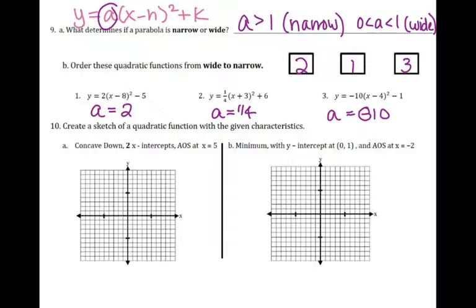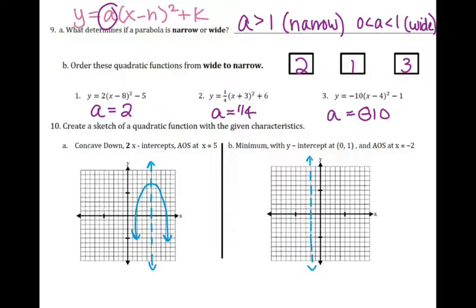Number ten: sketch a graph of a quadratic function with the given characteristics. For letter A — concave down, two x-intercepts, axis of symmetry at x = 5. I'll graph my axis of symmetry at x = 5, draw something opening down that crosses the x-axis twice. For letter B — has a minimum, y-intercept at (0, 1), axis of symmetry at x = -2. I go to x = -2 and graph the axis of symmetry. My y-intercept is (0, 1), and since it has a minimum the parabola opens up. I go through my y-intercept, and since parabolas are symmetrical that same point is on the other side of the axis of symmetry.